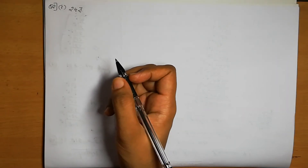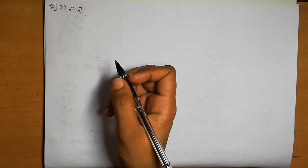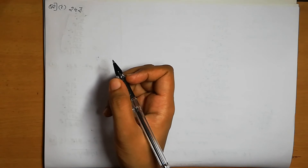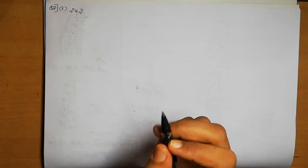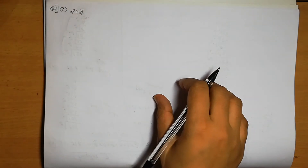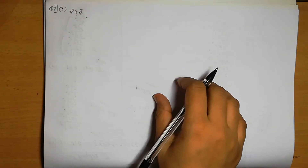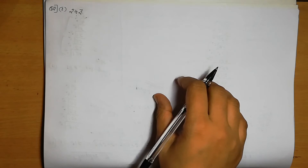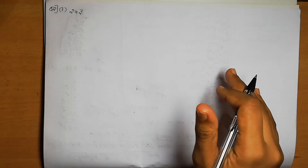Question number 2: Find the smallest number by which each of the following numbers must be multiplied to obtain a perfect cube. If a number is not a perfect cube, we multiply it by the missing factor to complete the triplet.